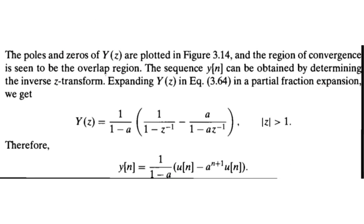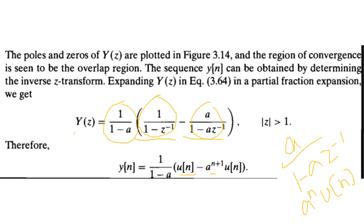Y(n) is obtained by determining the inverse Z-transform after applying partial fractions. The value of constant A is 1/(1−a) and the value of B is a/(1−a). The inverse Z-transform of the first term is U(n), and the inverse of the second term is scaled by a, giving a^(N+1)·U(n), because A raised to N is multiplied by A so the power adds to N+1. This scaling gives us the final Y(n).